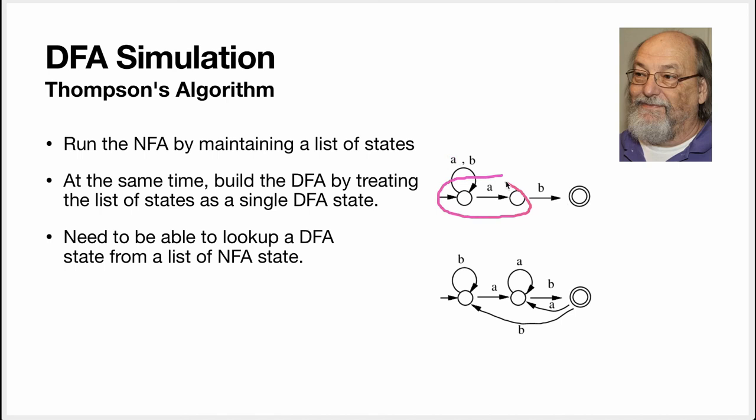So what we do at this stage is that we look up does there already exist a DFA state that matches this list. And there is. It's this state. No, sorry, it's this state. And because of that, we toggle to DFA and we just follow the transition in the DFA.